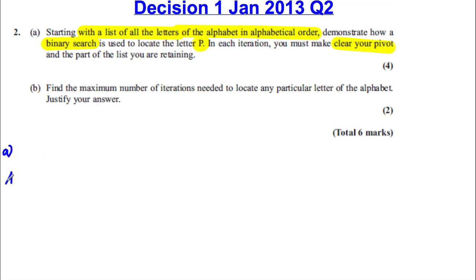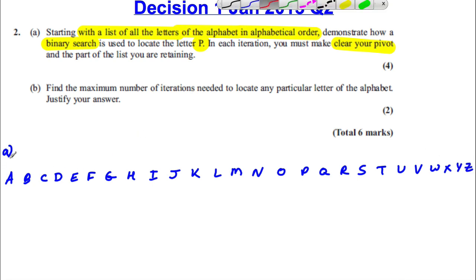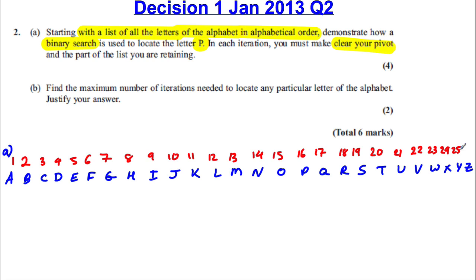So we'll have the letters A, B, C, D, E, F, G, H, I, J, K, L, M, N, O, P, Q, R, S, T, U, V, W, X, Y, and Z. And we always number our items in the list. So we have numbers 1, 2, 3, 4, 5, 6, 7, 8, 9, 10, 11, 12, 13, 14, 15, 16, 17, 18, 19, 20, 21, 22, 23, 24, 25, and 26.